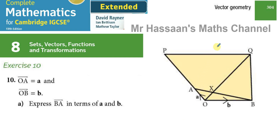Welcome back. This is Mr. Hassan's Maths Channel. I'm now answering a question on the request of one of the students on the channel from the Cambridge IGCSE Rayner Extended Maths book. This question is from Chapter 8, which is about sets, vectors, functions and transformations — specifically the part about vector geometry on page 304, exercise 10, question 10.